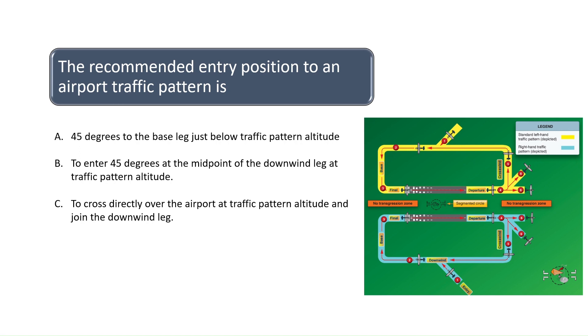As you can see, the recommended entry to an airport traffic pattern is to enter at a 45-degree angle at the midpoint of the downwind leg at traffic pattern altitude. Traffic pattern altitude is typically 1,000 feet above the airport elevation unless otherwise indicated.